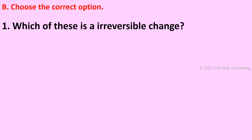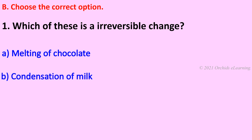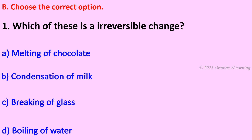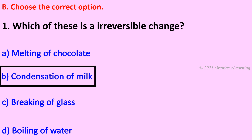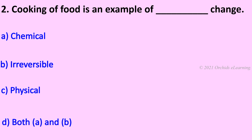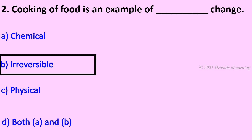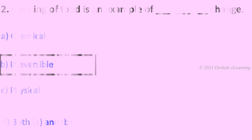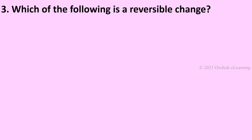Which of these is an irreversible change? Condensation of milk. Cooking of food is an example of blank change — irreversible.